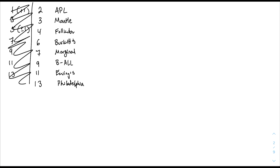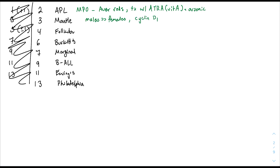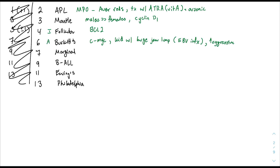APL: M3 AML — M for MPO with Auer rods on histology, treat with all-trans retinoic acid (vitamin A) and arsenic. Mantle: 'man' — males much more than females, think of D for cyclin D1. Follicular: '4-licle-tubicle' = BCL2. Burkitt's: Michael Burry from The Big Short — Michael for C-MYC, associated with Epstein-Barr virus, huge jaw lump in a child, extremely aggressive. This makes follicular indolent, mantle aggressive, marginal indolent. Marginal: Marjorie Taylor Greene, inflammation — associated with H. pylori, Sjogren's, and Hashimoto's.